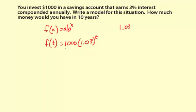Okay, so there's your function model. We want to know in 10 years how much money will you have. So we're going to do an input of 10 for the time. So f of 10 equals 1,000 times 1.03 to the t power.